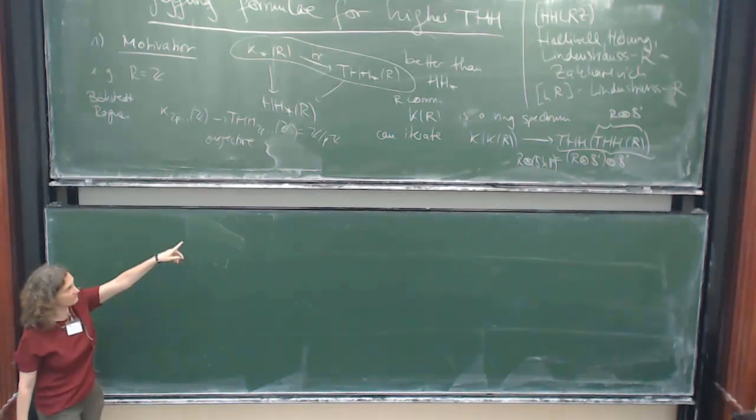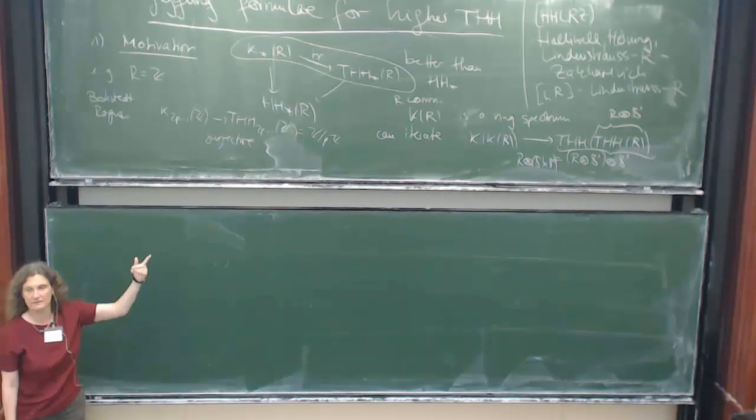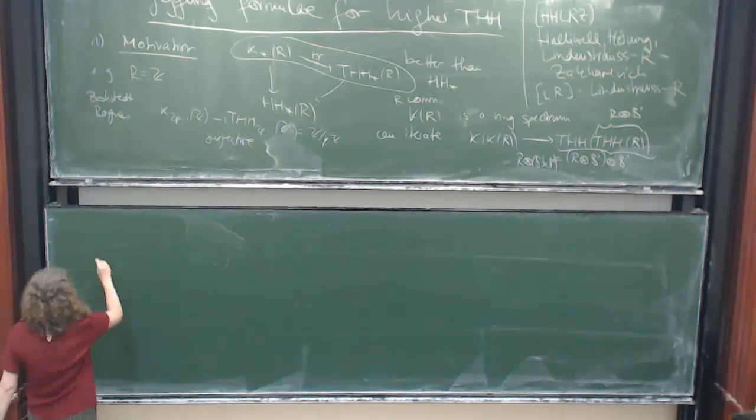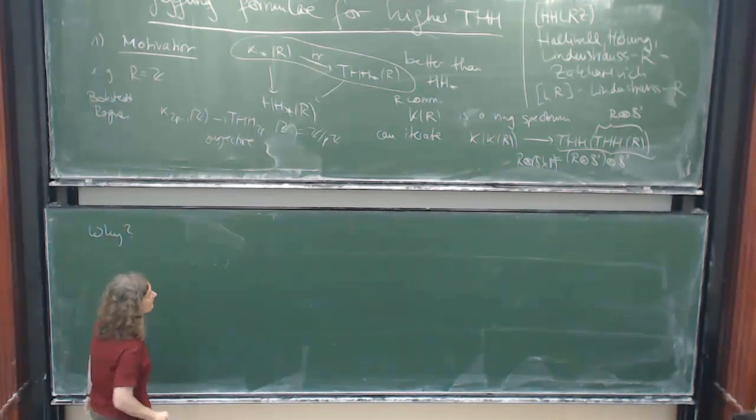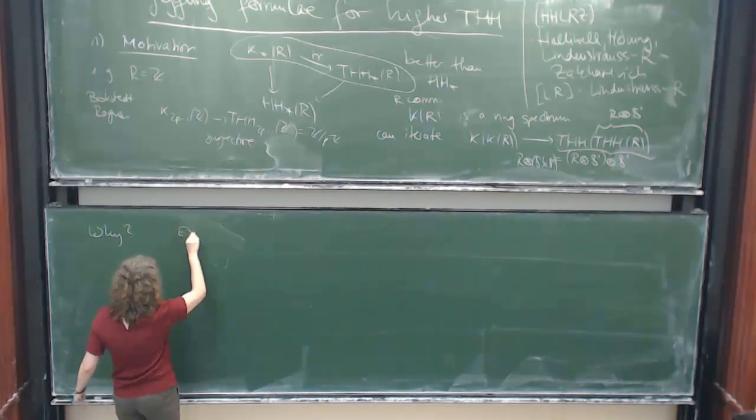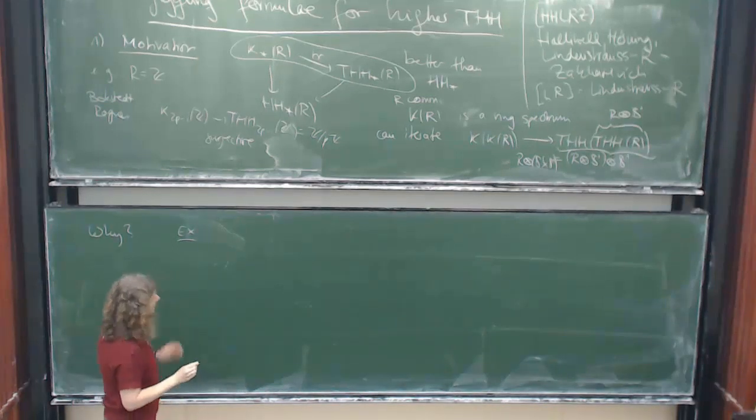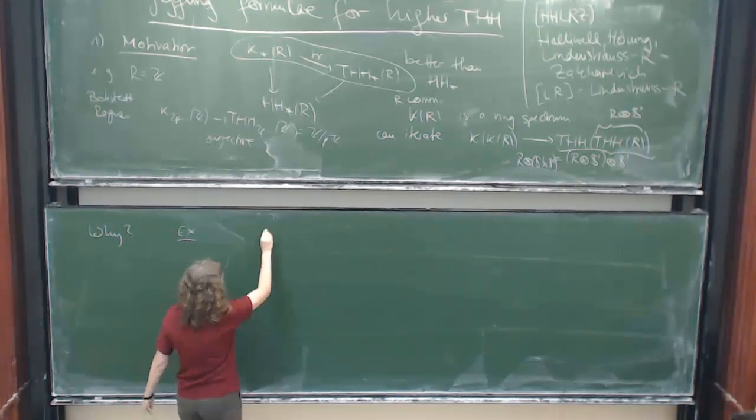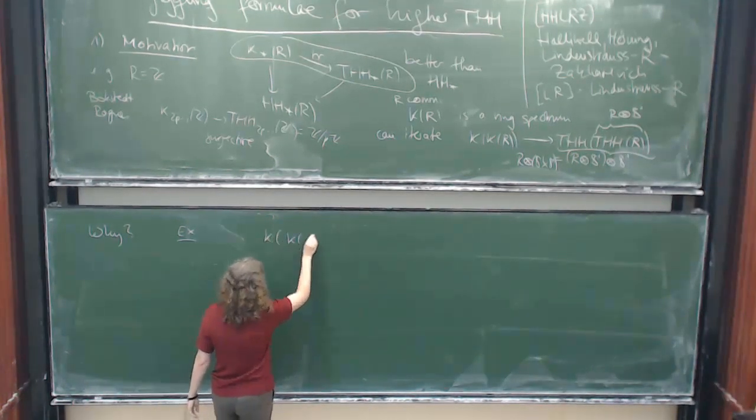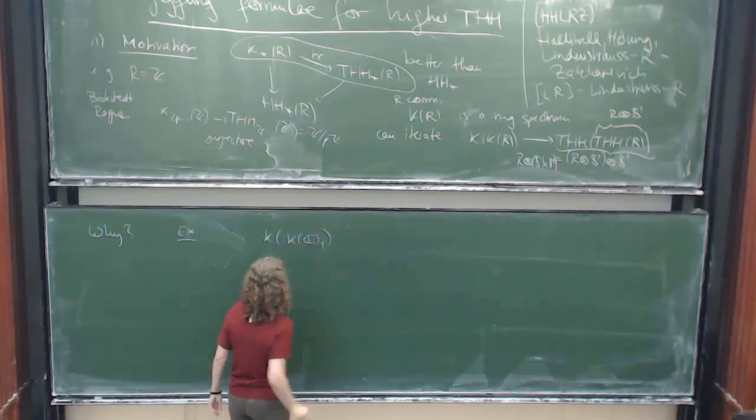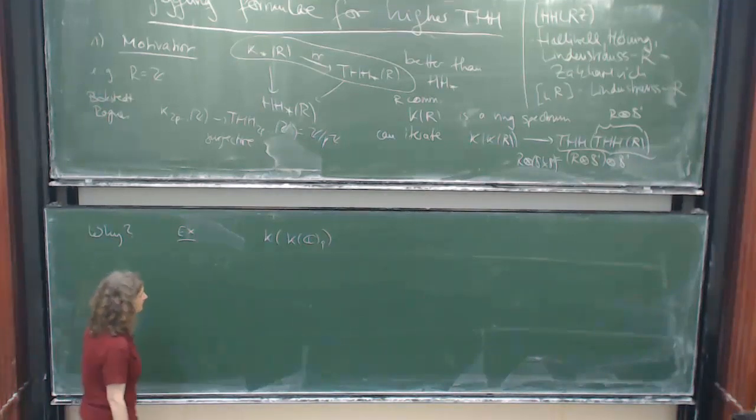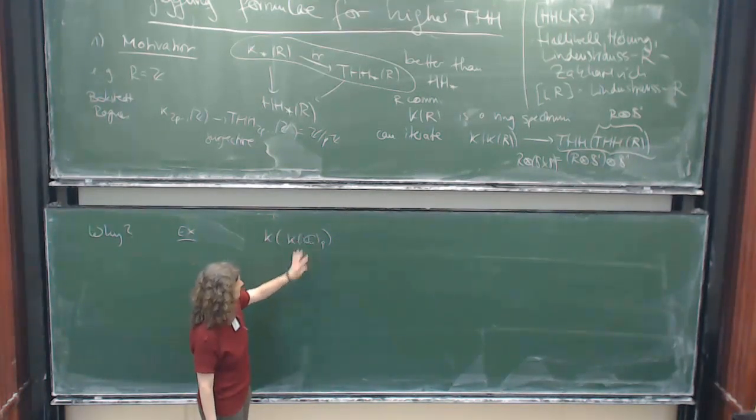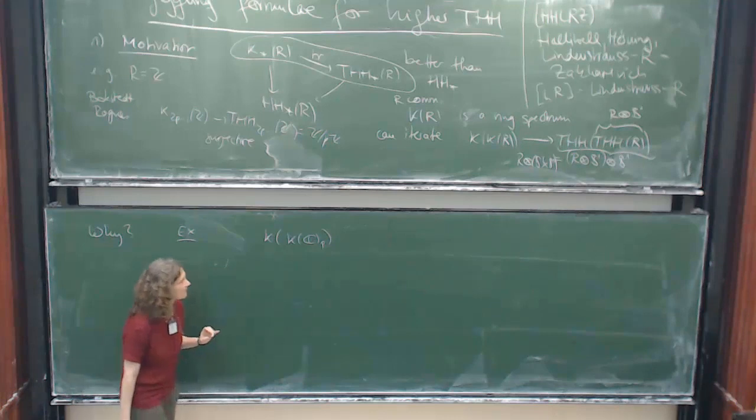But besides from being masochistic, why should you do this? So let me just mention two examples. The first is saying, well, it doesn't really matter whether you take the complex numbers.